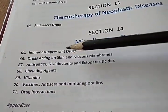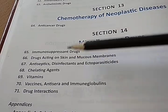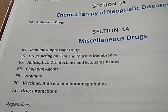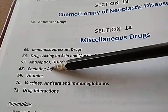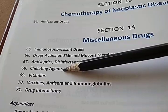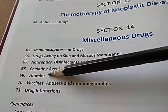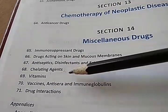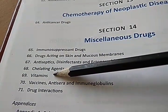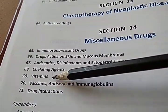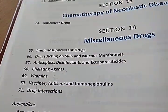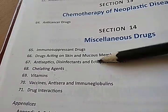Then miscellaneous drugs: immunosuppressant drugs to suppress your immune system — this is done for organ transplants, otherwise why would you suppress somebody's immune system. Then chelating agents to remove metal poisons if somebody takes them. Vitamins — you will prescribe vitamin B12, folic acid, vitamin C. Then vaccines — so many vaccines.